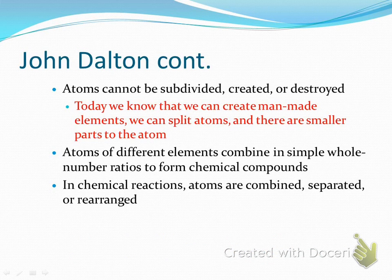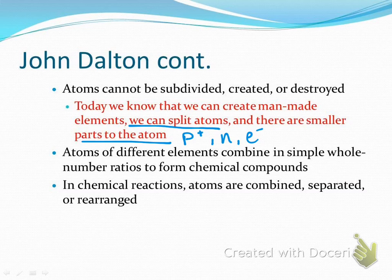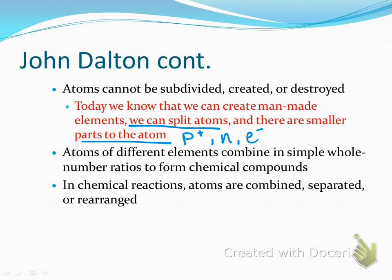Dalton also said atoms cannot be subdivided, destroyed, or created. But today we know that we can create man-made elements. We know we can split atoms and that there are smaller parts to the atom: the proton, the neutron, and the electron. Dalton thought an atom was just one whole thing containing everything it needed. We know today that we can split them, make elements, and that there are smaller subatomic parts. In chemical reactions, we combine, separate, or rearrange our atoms — that part is still true today.